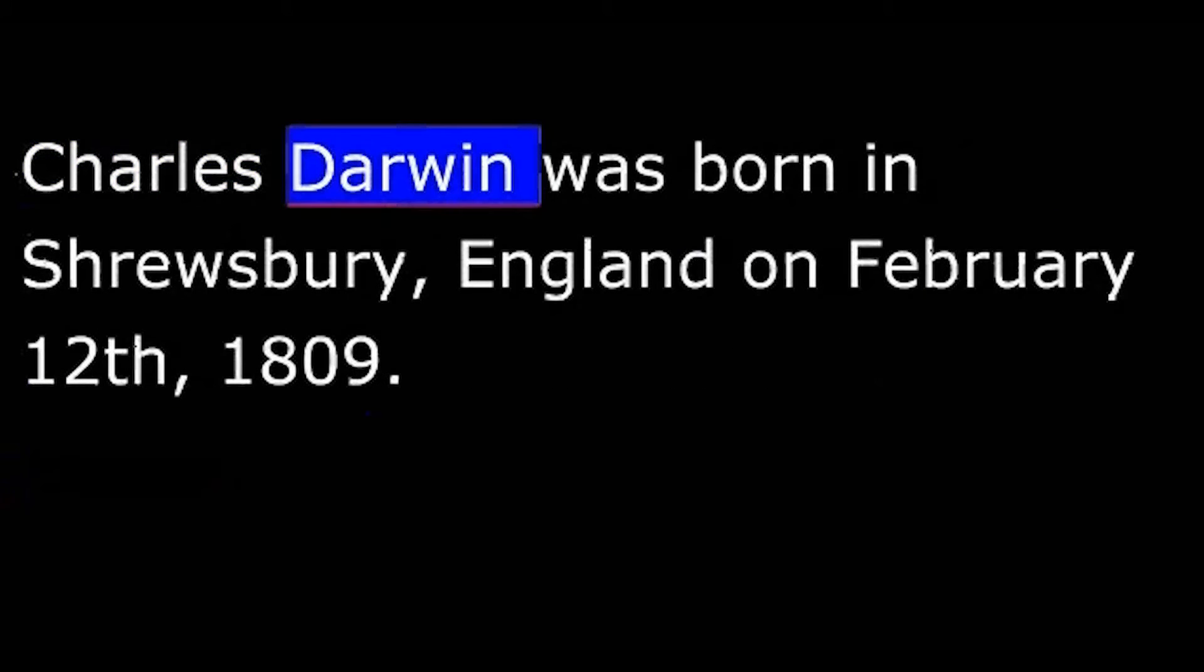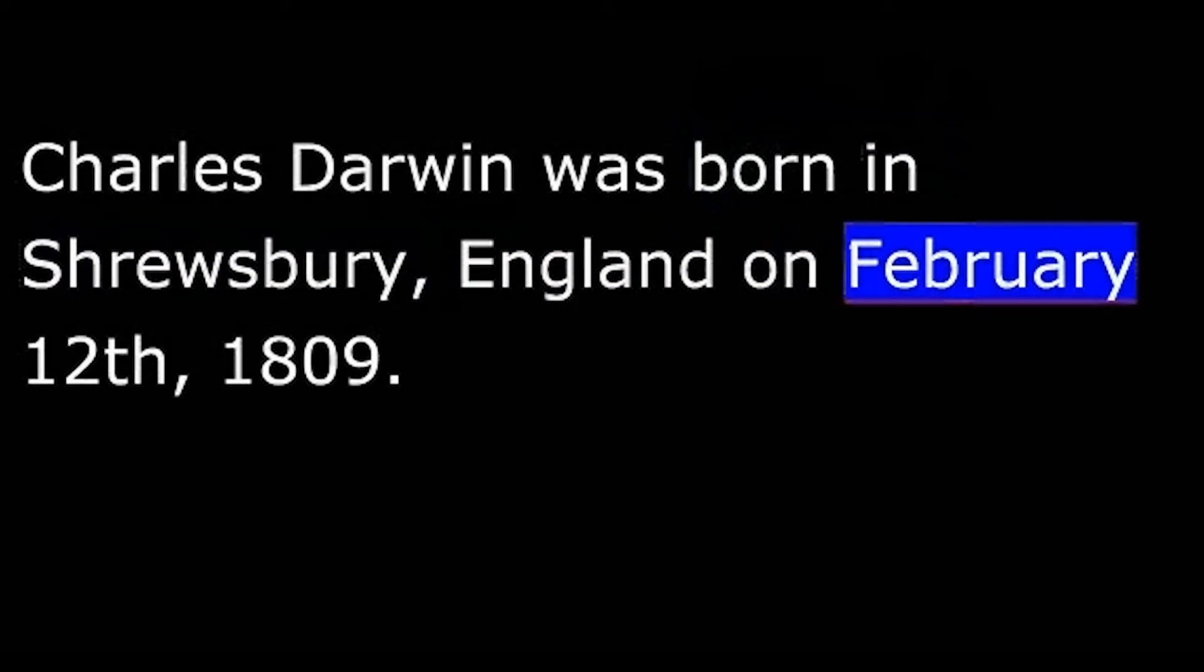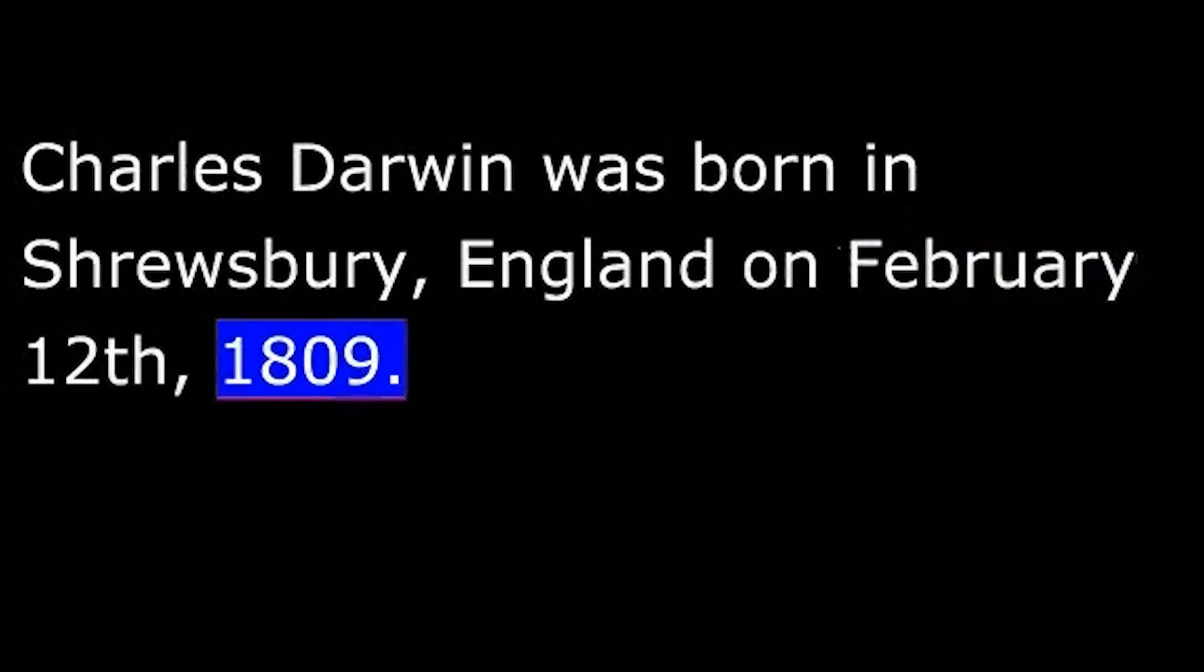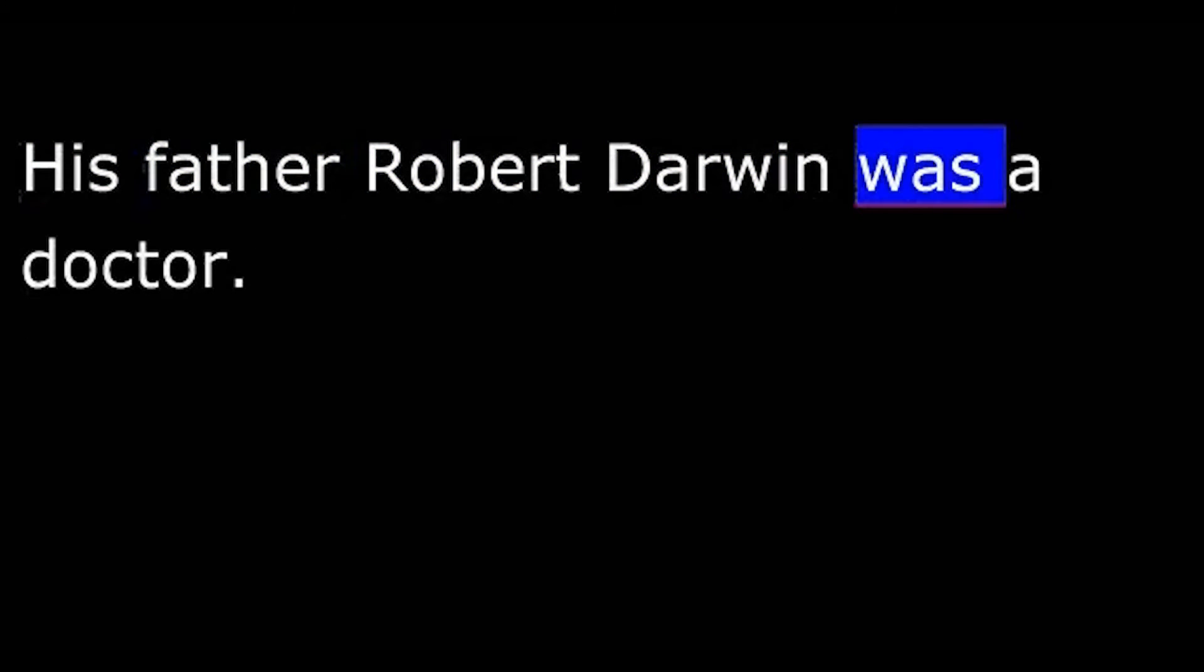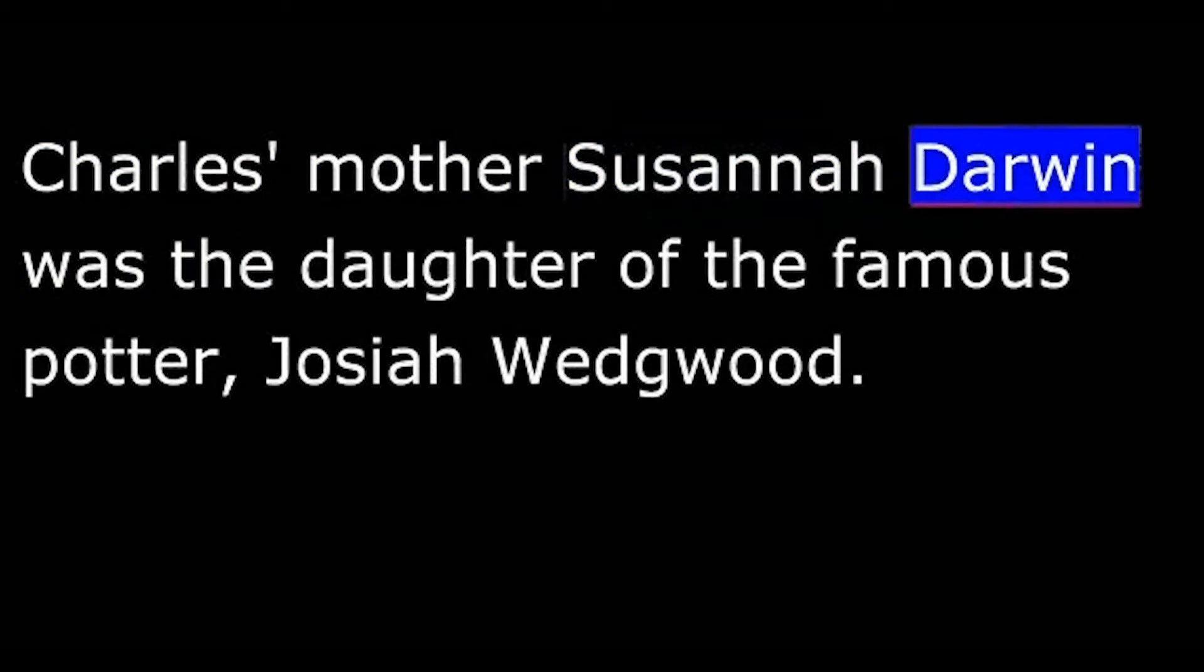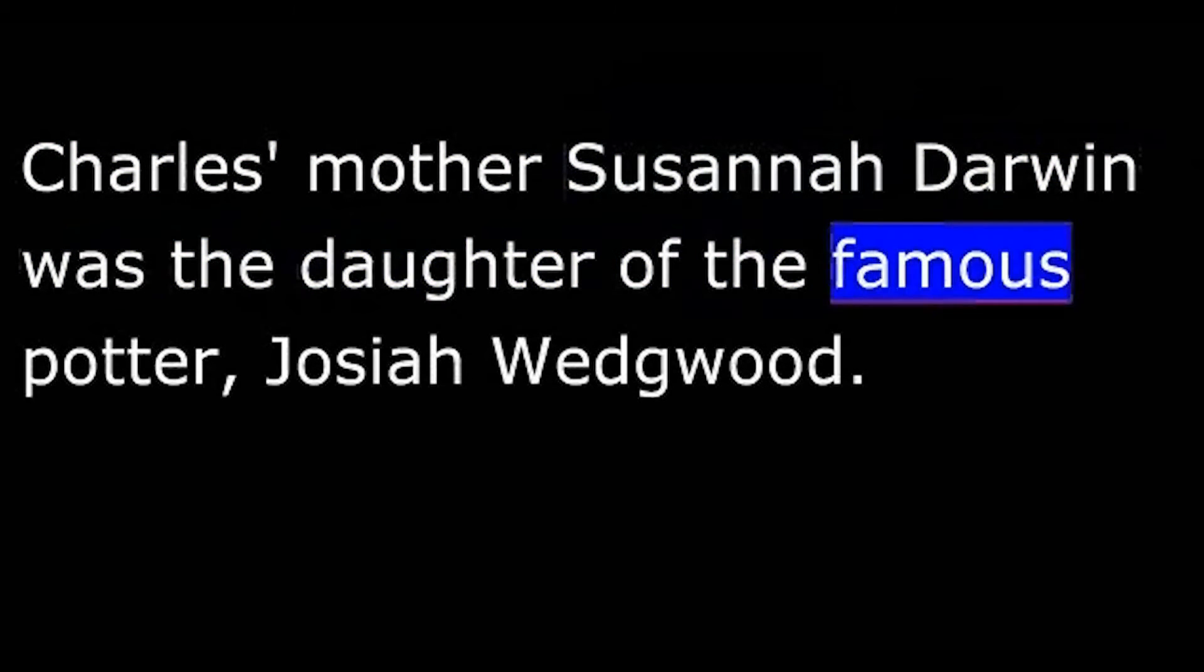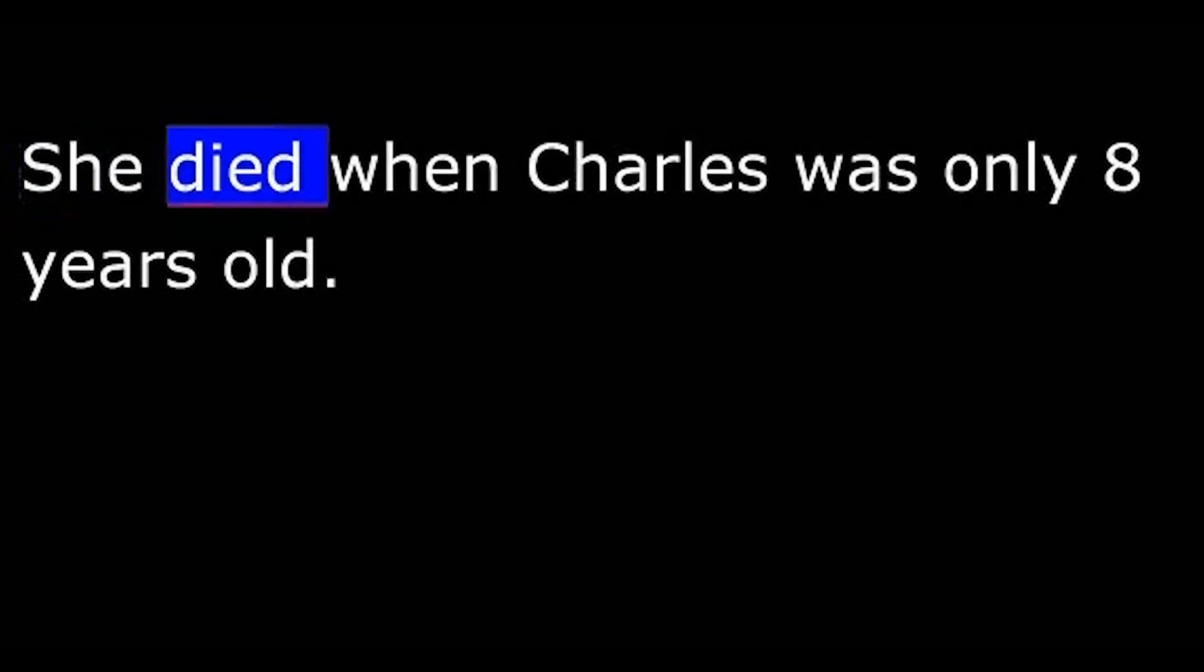Charles Darwin was born in Shrewsbury, England on February 12, 1809. His father Robert Darwin was a doctor. Charles's mother Susanna Darwin was the daughter of the famous potter Josiah Wedgwood. She died when Charles was only eight years old.